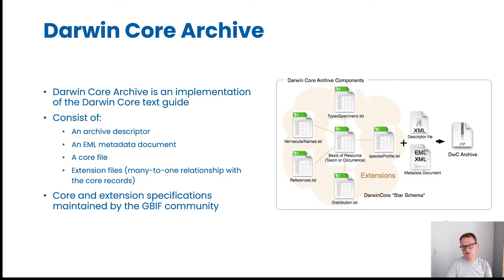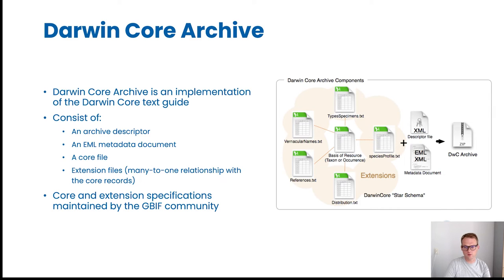The file format we use for sharing Darwin Core aligned data is the Darwin Core Archive. The Darwin Core Archive is basically a zip file that contains an archive descriptor, which is an XML file describing all the resources in the archive. It also contains an EML metadata document and one or more data files. These data files always include a core file and optionally one or more extension files, where records in the extension files have a many-to-one relationship with the core records.